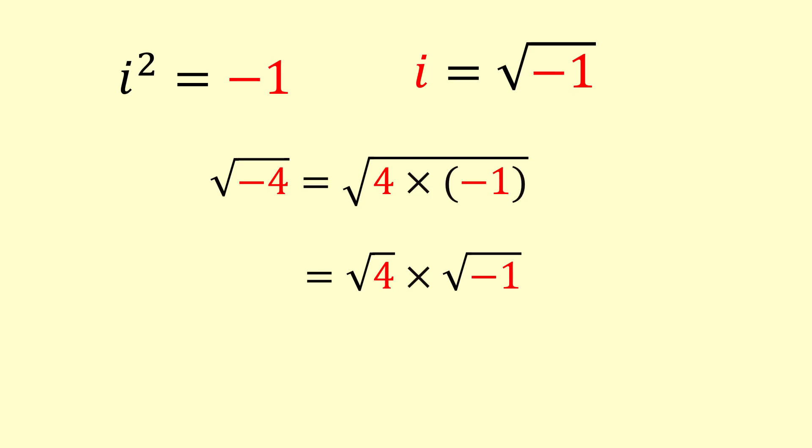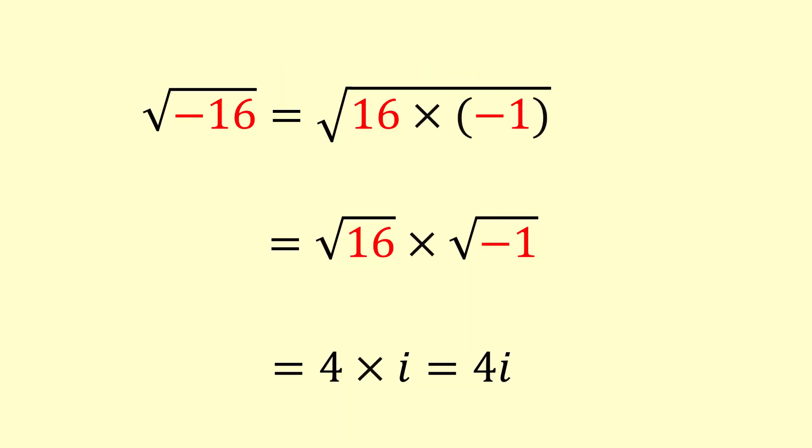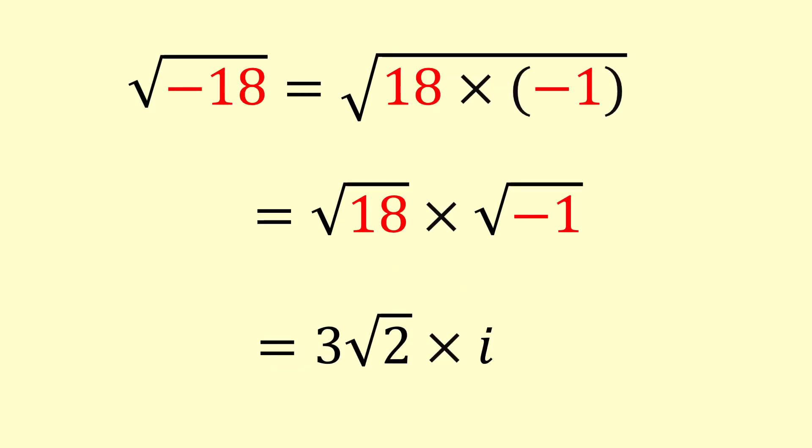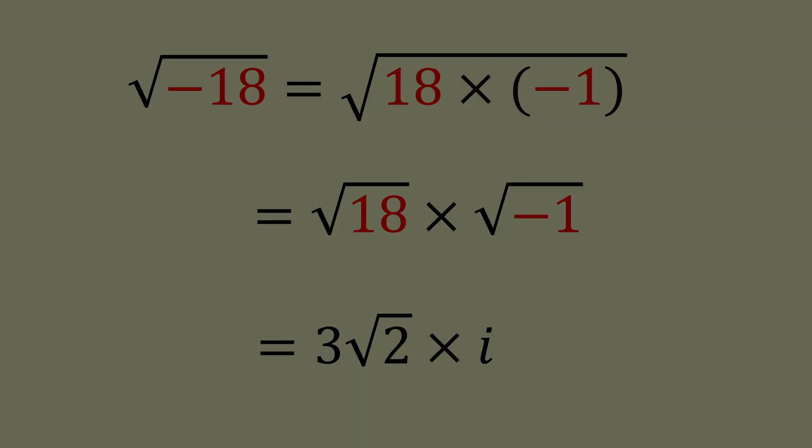We already know that square root of 4 equals 2 and we have set i squared equals negative 1. So we will replace square root of negative 1 equals i, that is iota. Hence, square root of negative 4 equals 2 times iota. Similarly, you can find a square root of negative 16 and a square root of negative 18.